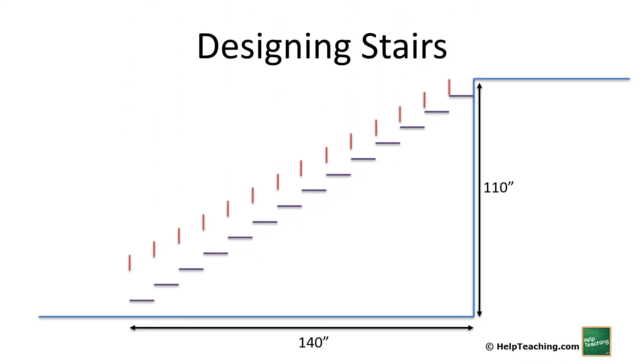We can add our risers. 14 treads, each one at 10 inches long, means we're going to need a distance of 140 inches on the floor in order to be able to get our rise of 110 inches to our next floor.